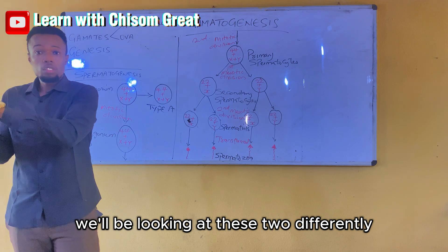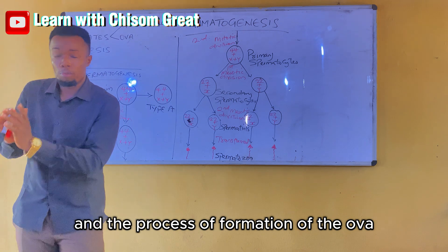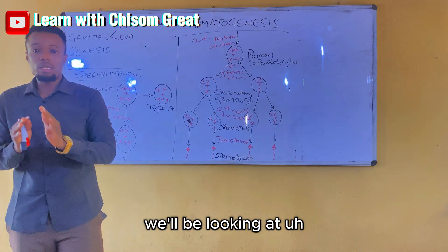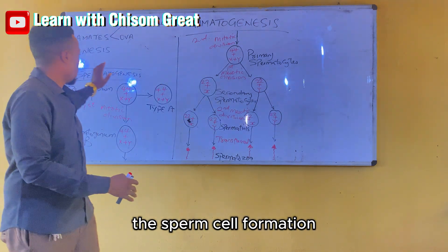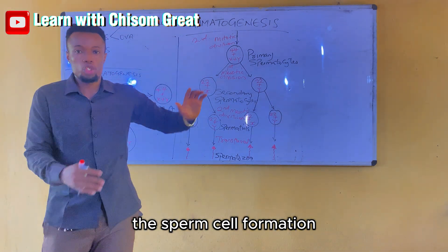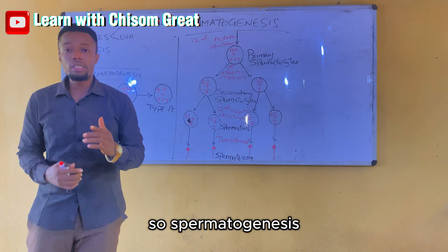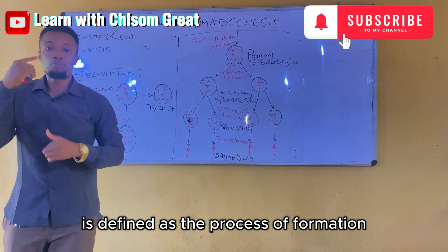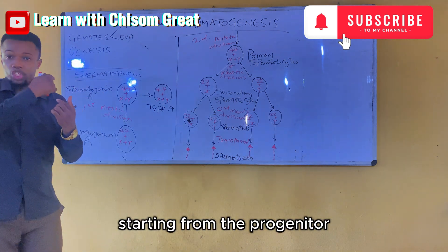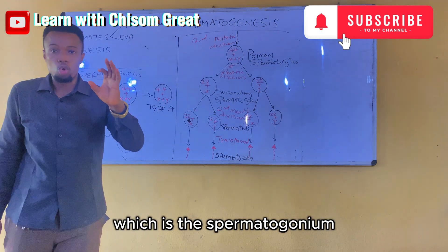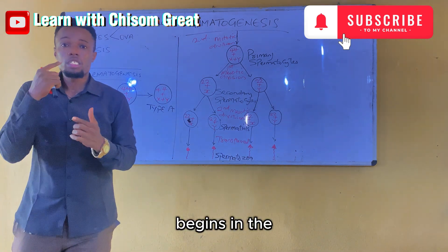We'll be looking at these two processes differently — that is, the process of formation of the sperm cells and the process of formation of the ova. Let's start with the sperm cell formation, which is known as Spermatogenesis. Spermatogenesis is defined as the process of formation of the sperm cell, starting from the progenitor, which is the spermatogonium. The process of Spermatogenesis begins in the seminiferous tubules.